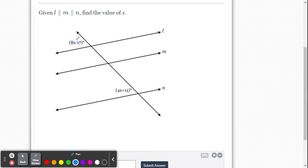So this time we don't have a direct relationship between these angles, but I know that the 4x plus 11 would correspond right here. And then these two angles would correspond. So they're corresponding angles, which means the measures are the same. So the algebraic equation is simply 8x minus 17 equals 4x plus 11.